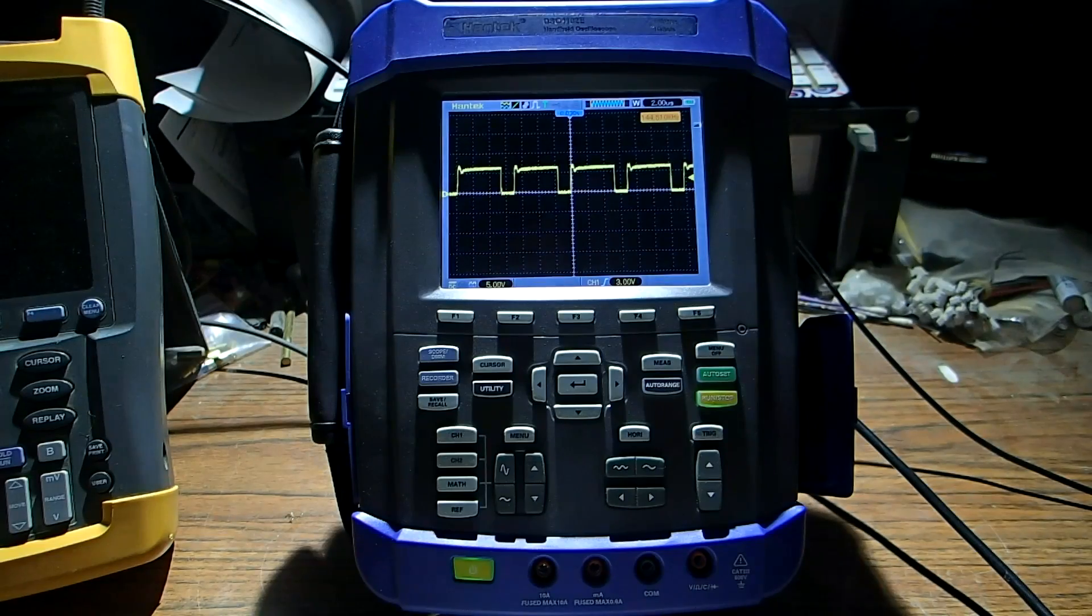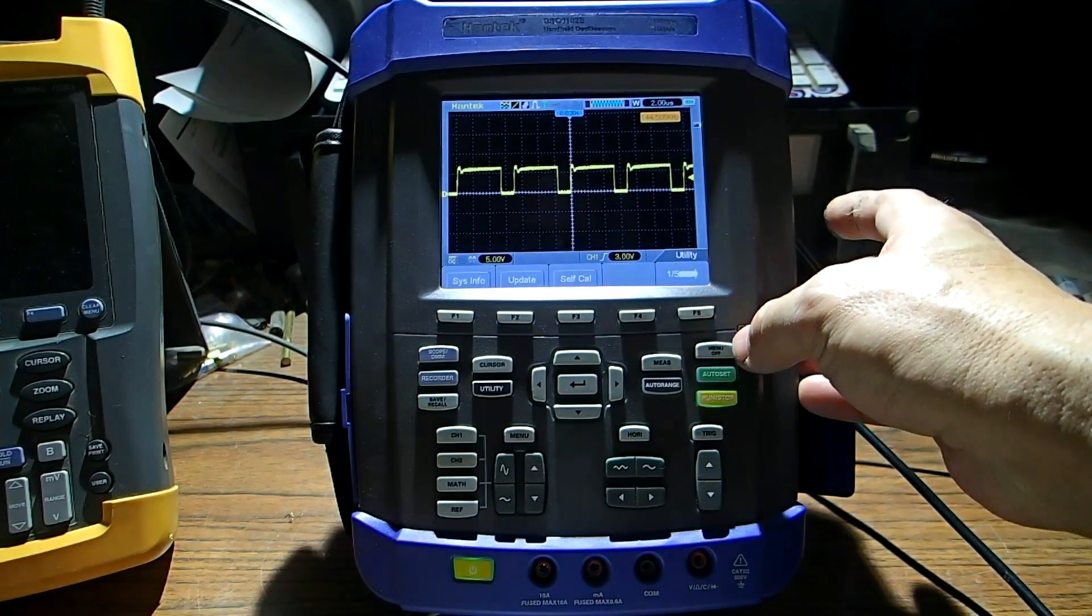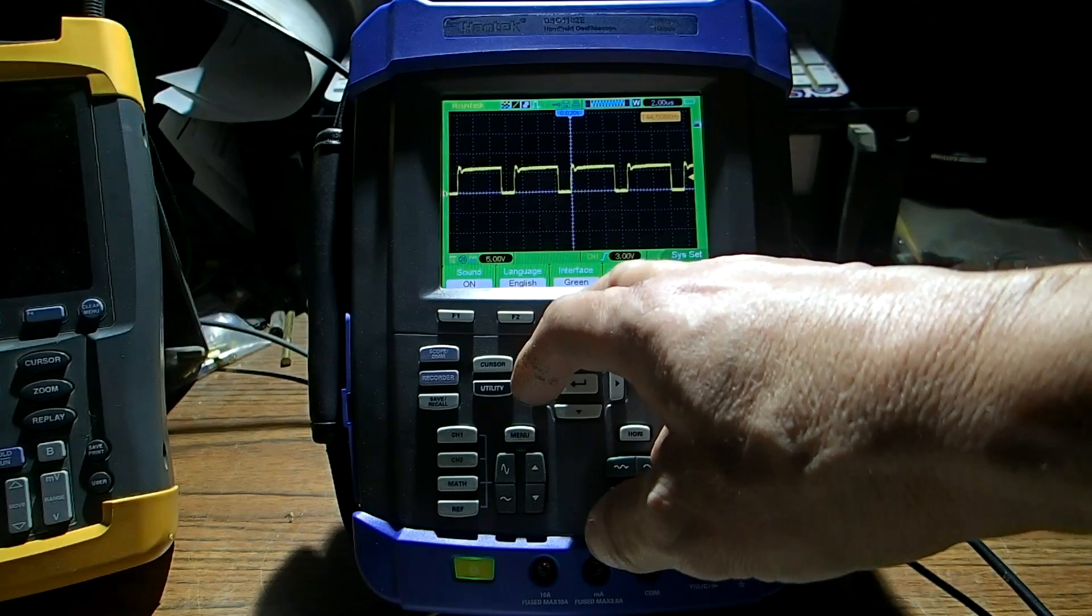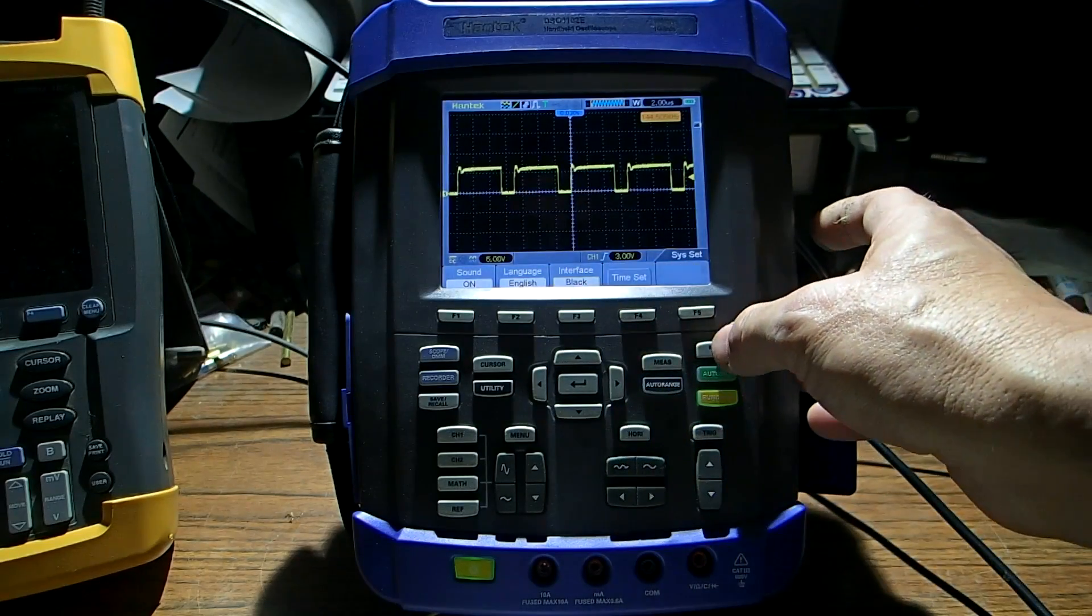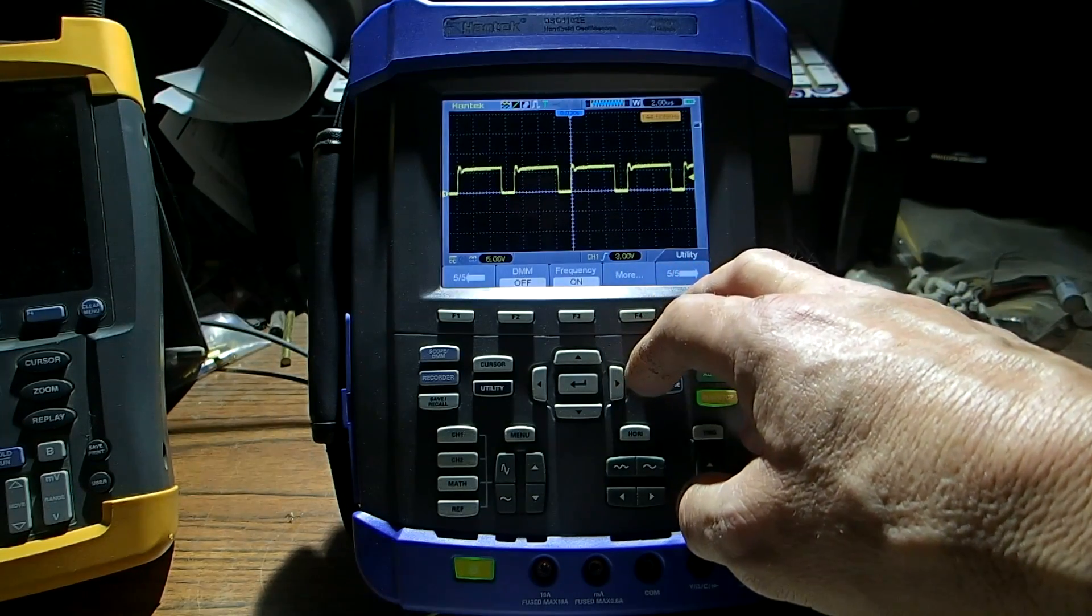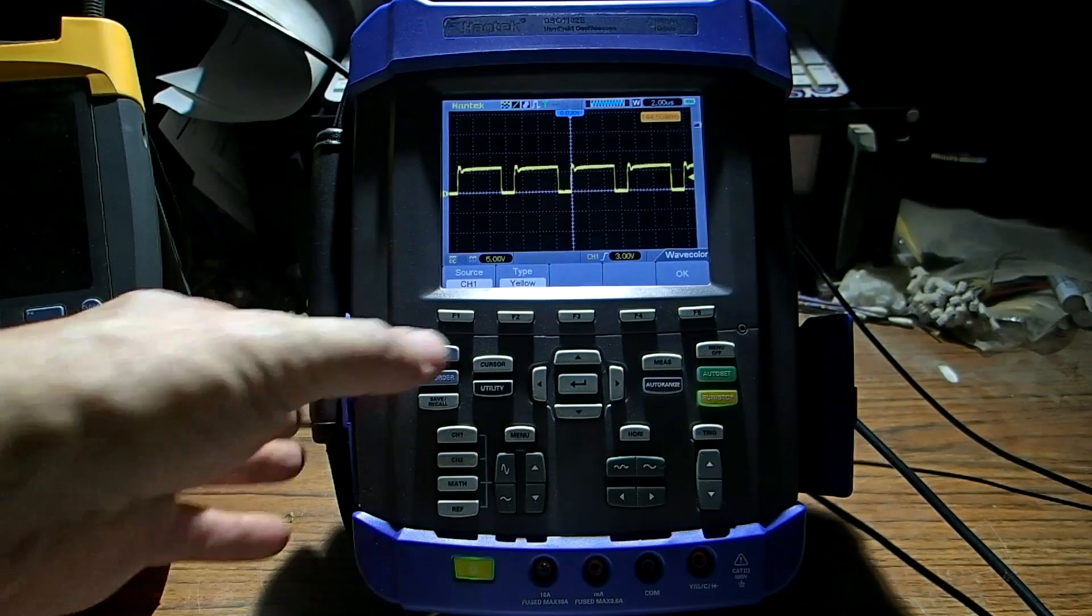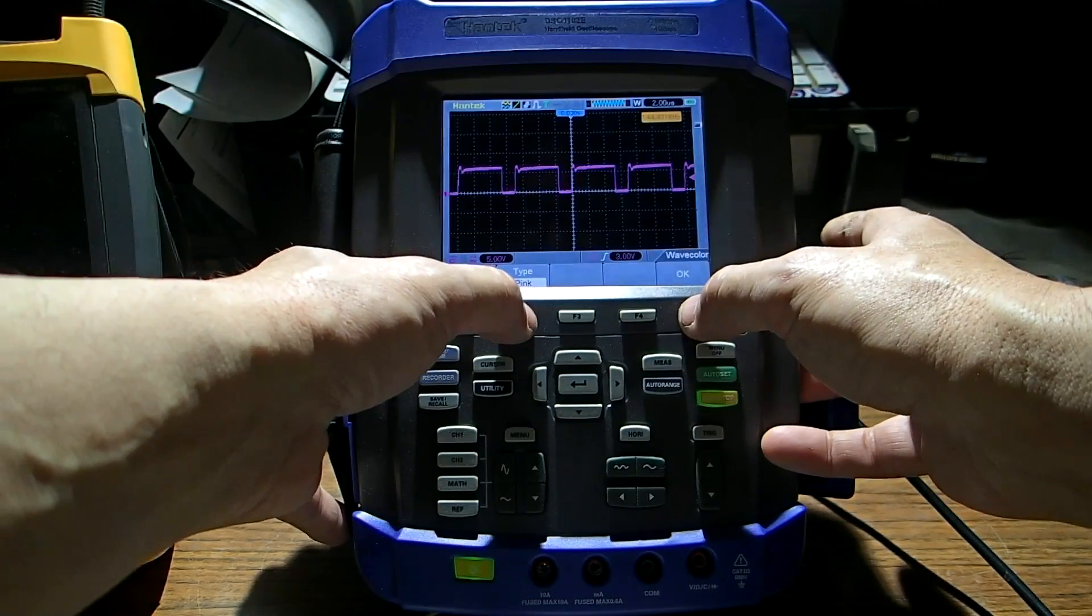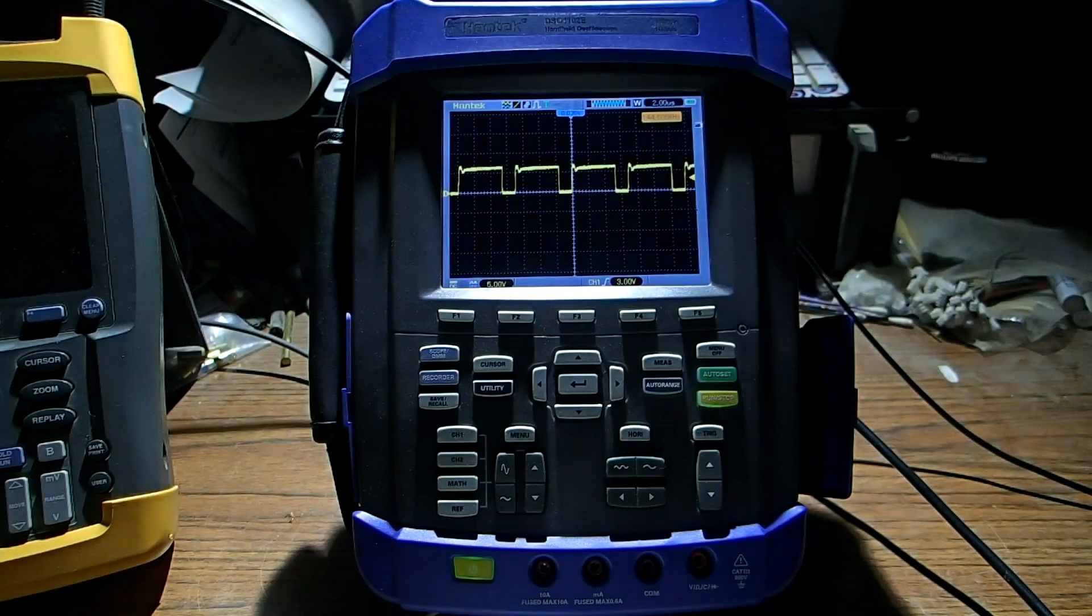One thing this does have that the Fluke scope doesn't have is you can change the color of the screen. Under system you can do, it's called the interface but it's really like the border. It has the selections of color. And then we go in here to more. You'd think it'd be under display but it's not. Go to wave color. And we can select orange, red, green, pink, cyan, or standard yellow. So that's kind of cool. The Fluke scope doesn't have that.